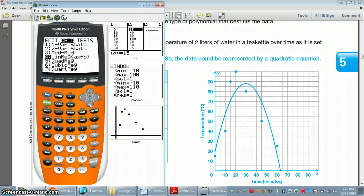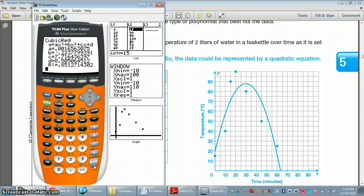and we go down to number 6, which has cubic regression line, and we push enter. The same thing will show up in your calculator screen. You just go down to calculate or push enter. And